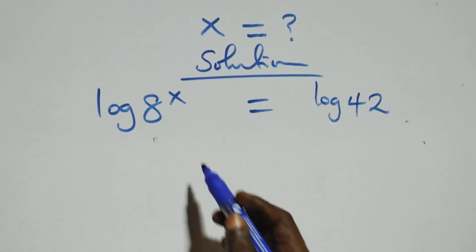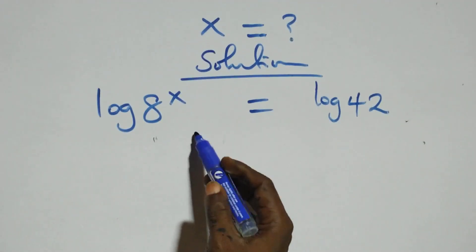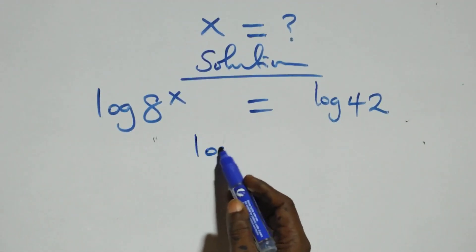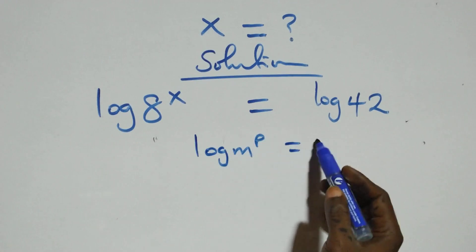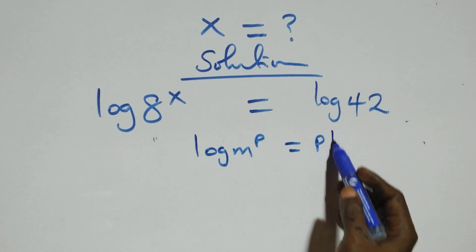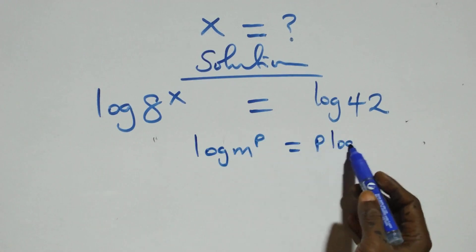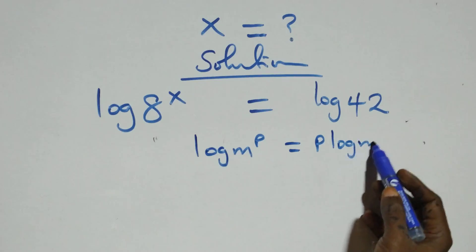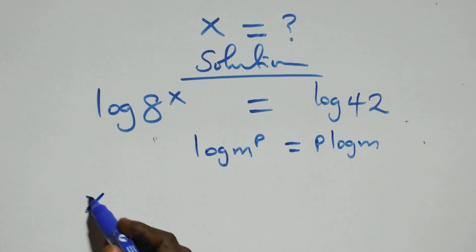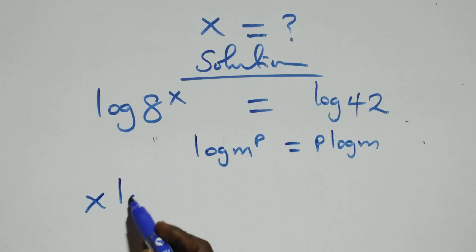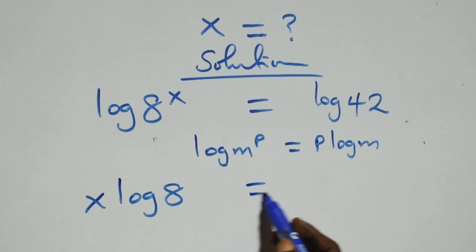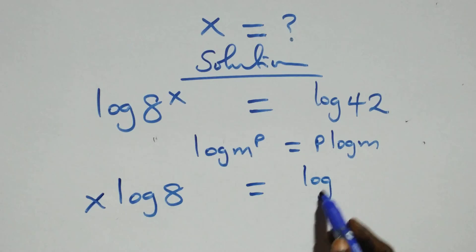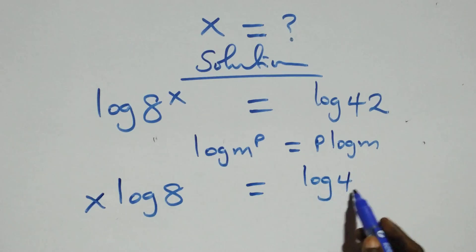The next step: we apply the power rule of logarithms. When we have log(m^p), it is the same as p·log(m). So this becomes x·log8 equals log42.